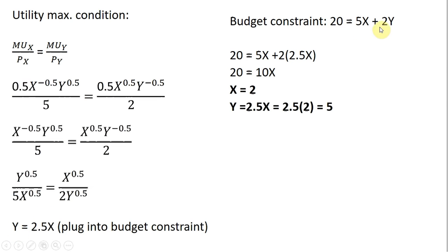Plugging Y equals 2.5X into the budget constraint and simplifying, we find X equals 2 and Y equals 5 — the same result we saw graphically.